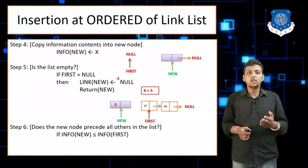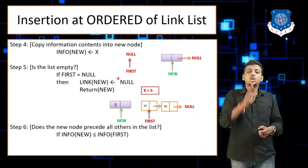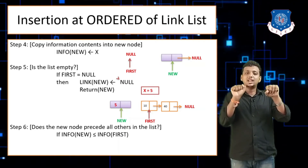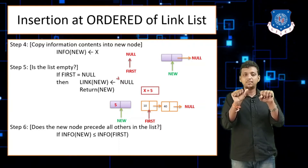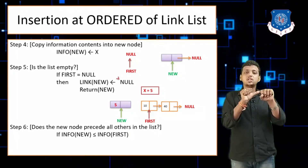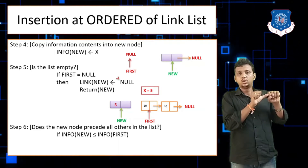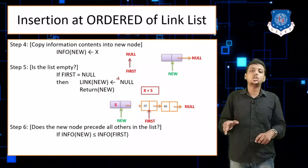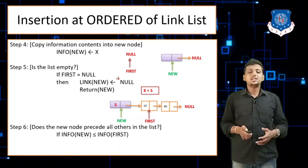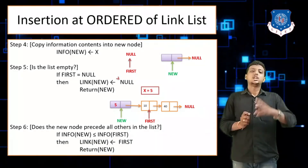If info of new is less than or equal to info of first, the new node must be inserted at the first position. The link of the new node points to the first node — write: link of new arrow first. In this situation the new node becomes the first node, so we write return new. That completes the second condition.